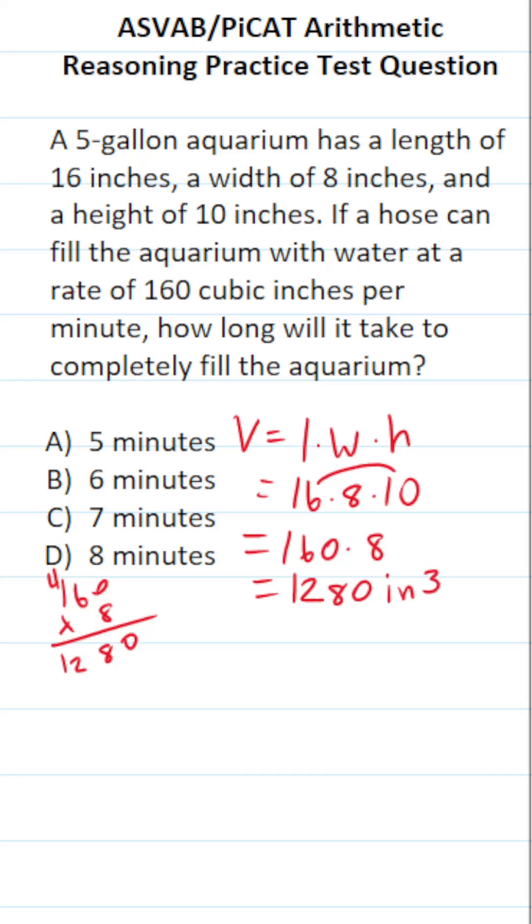Now, according to the problem, this hose can fill the aquarium at a rate of 160 cubic inches per minute. So to find how long it's going to take to completely fill the aquarium, we're going to do 1,280 divided by 160. Of course, we're going to cross out these units, and we're also going to cross out these corresponding zeros to make this 128 over 16.